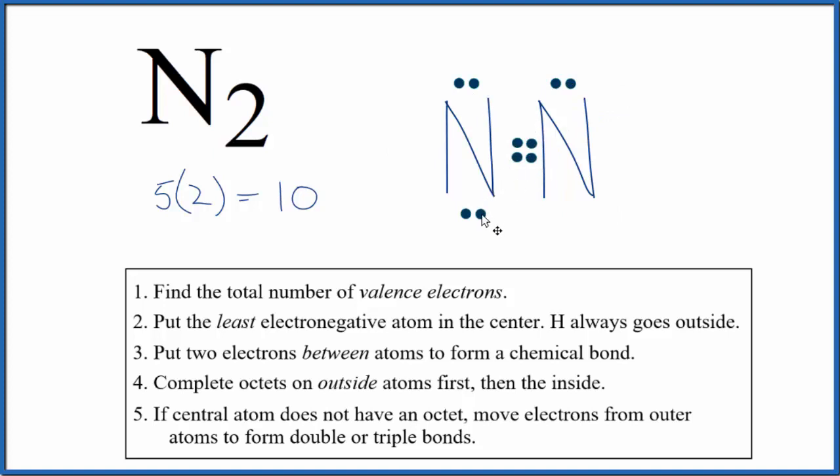Let's move another pair to the center here. So now we have a triple bond. This nitrogen has 8, that's an octet. This nitrogen has 8, that's an octet, and we're only using 10 valence electrons. So this is the Lewis structure for nitrogen.